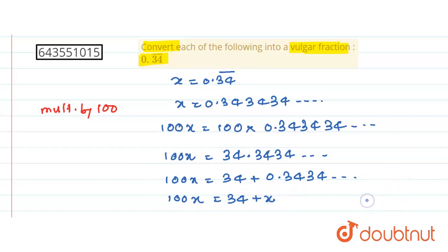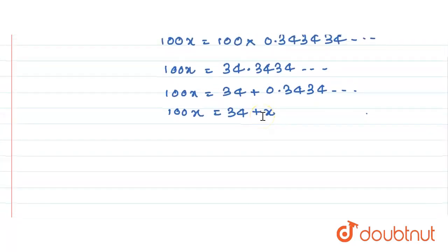From what we considered earlier in the first step. Now, this x is plus, so if we take it to this side, it becomes minus. Therefore, 100x minus x equals 34.